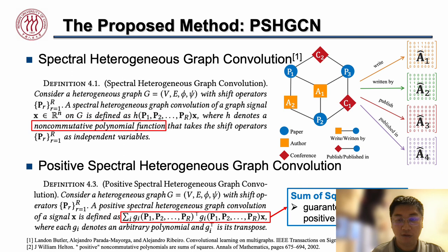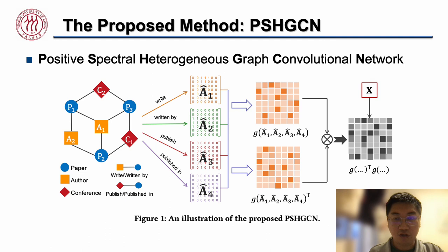So we further propose the positive spectral heterogeneous graph convolution, which uses the sum of squares to formulate the heterogeneous graph convolution, ensuring positive semi-definiteness from the perspective of graph optimization. This gives rise to our proposed model, called PSHGNN.